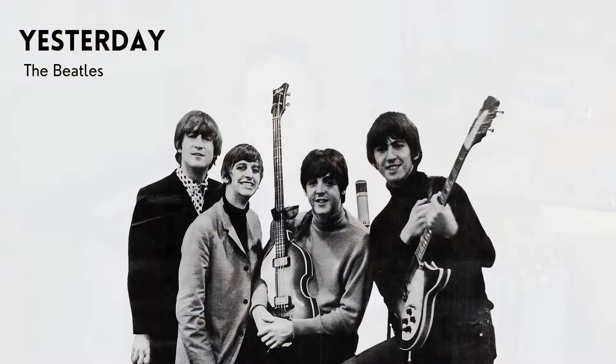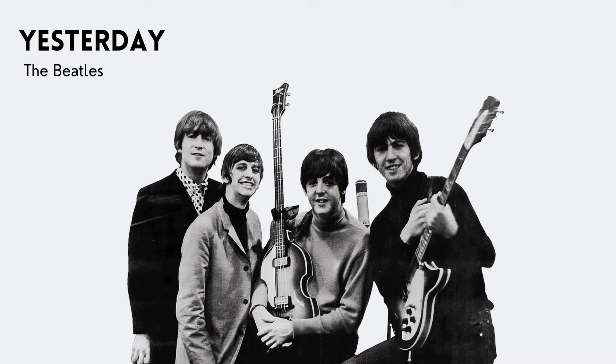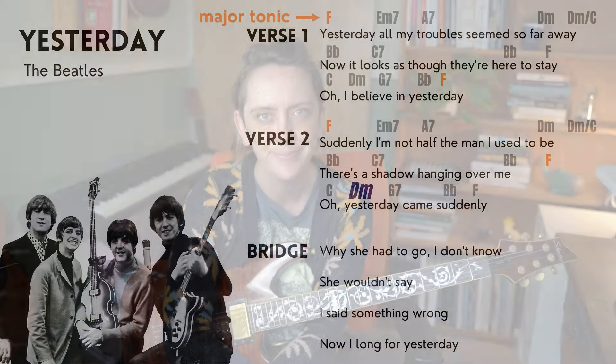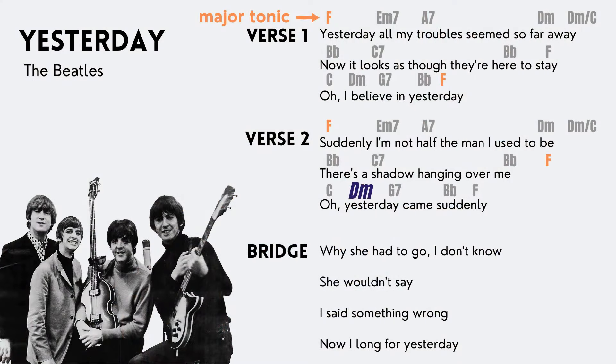A really beautiful example from contemporary music history is the song Yesterday by the Beatles. Let's take a listen to the transition from the A section into the bridge, which is in the relative minor. [Yesterday excerpt]